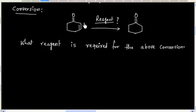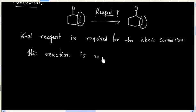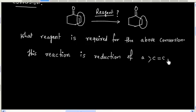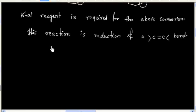If you see this reaction, we have a reduction of a double bond. This reaction is a reduction of a carbon-carbon double bond. So we can use catalytic hydrogenation.